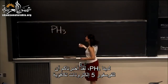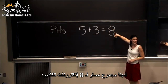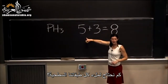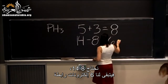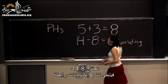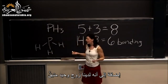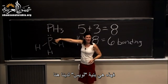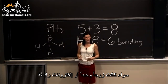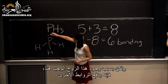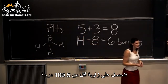We have PH3. Phosphorus has five valence electrons plus three from each of the hydrogens, so we have a total of eight valence electrons. How many do we need to get full valence shells everywhere? Fourteen. So we need fourteen minus eight, which leaves us with six bonding electrons. We have three bonds plus one lone pair left over. If these bonds were all completely equal distance apart, the angles would be 109.5 degrees. But because there's this lone pair, it's pushing down on the other bonds, so we end up with an angle of less than 109.5 degrees.